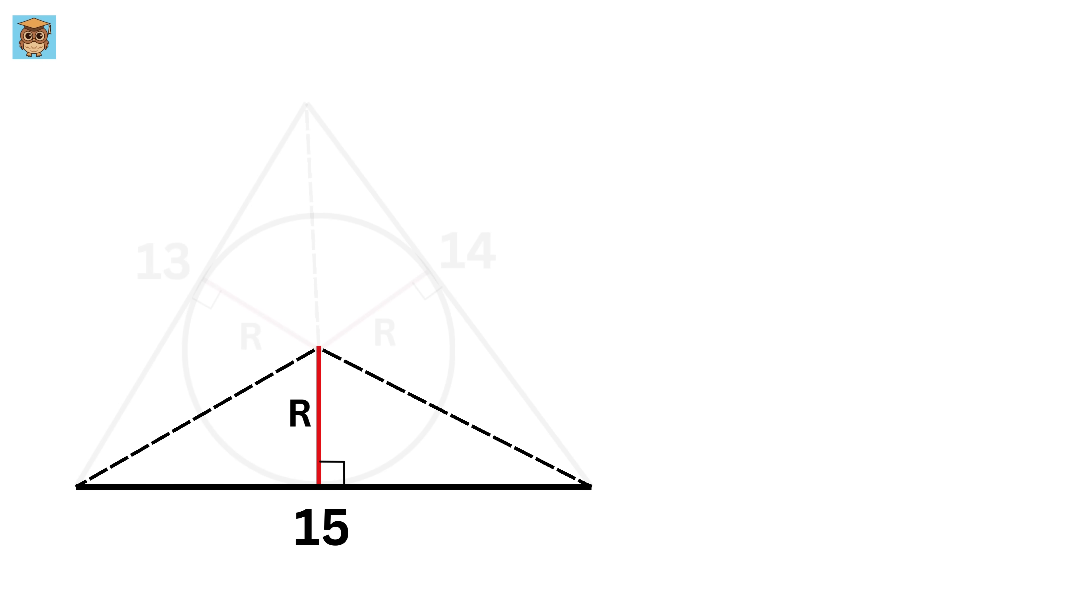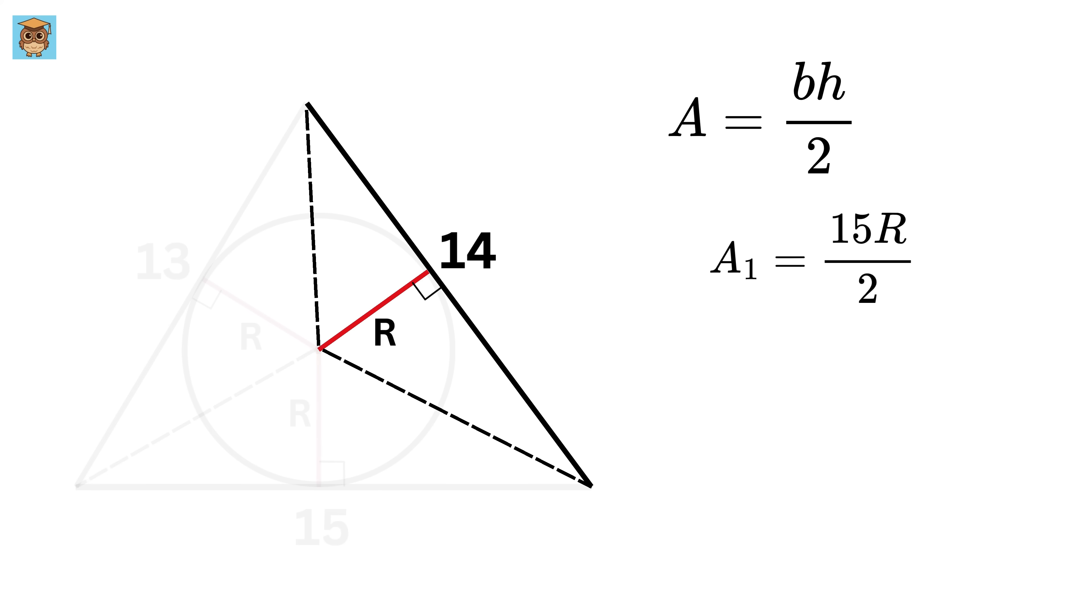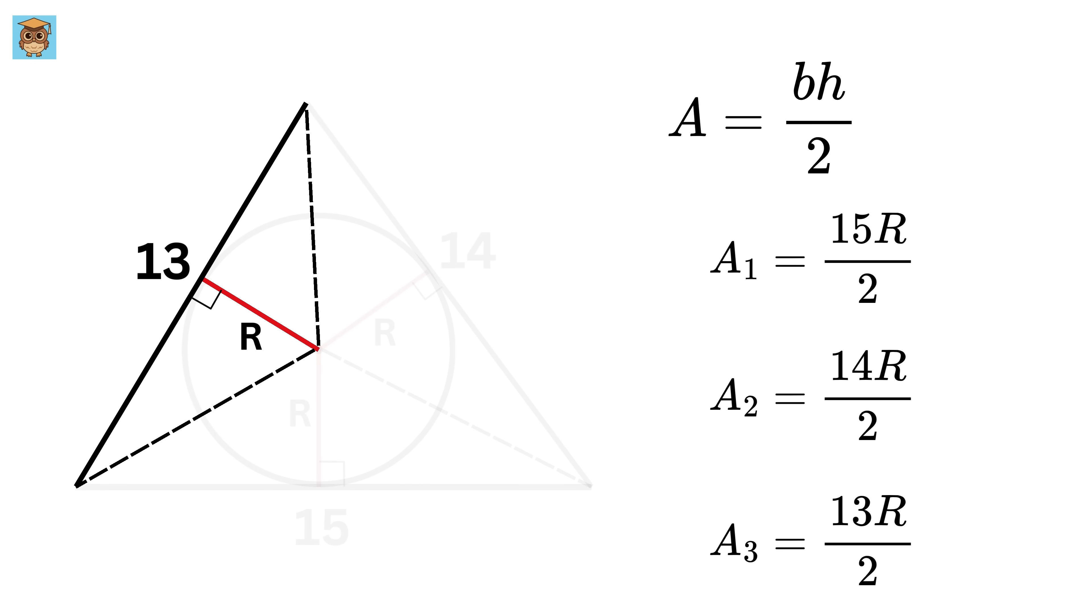Now what will be the area of this triangle? It will be equal to base times height divided by 2. Right? So, the area of this triangle will be 15 times R divided by 2. Similarly, the area of this triangle will be equal to 14 times R divided by 2, and the area of this triangle will be equal to 13 times R divided by 2. You might be wondering why we are doing this.